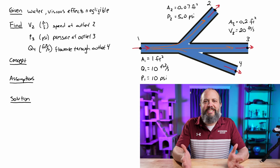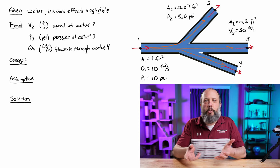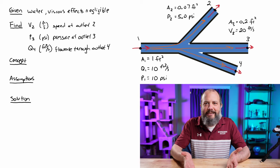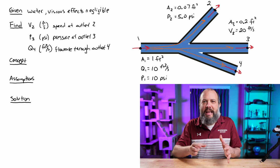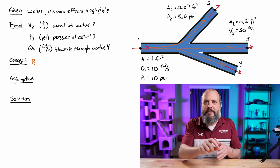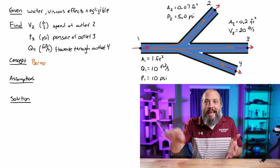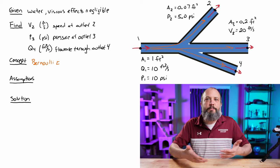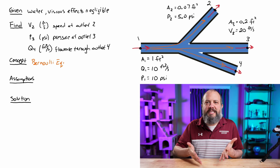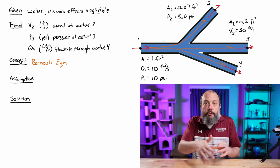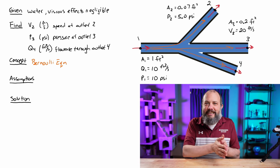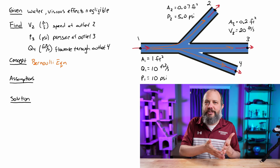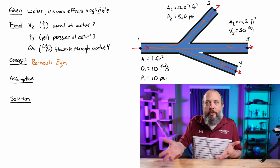So the Bernoulli equation is used for two different points along the same streamline. A streamline means imagine you had a single molecule of water. Would that molecule actually be able to reach from point A to point B? If so, then they're on the same streamline and you can potentially use Bernoulli's equation.